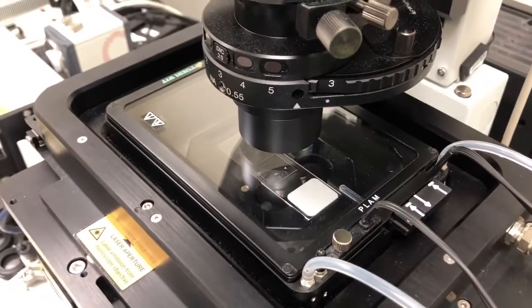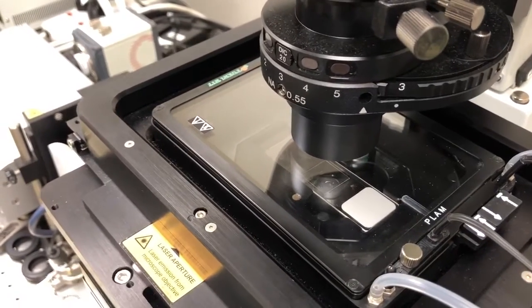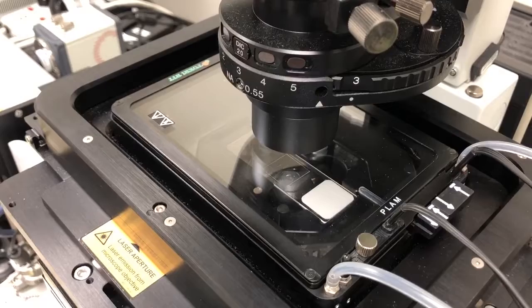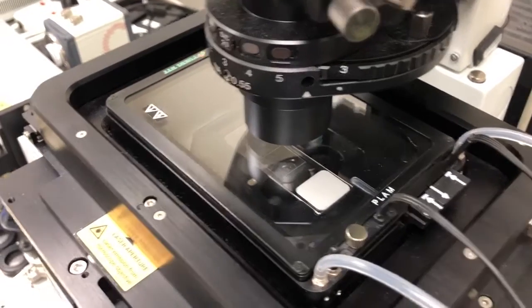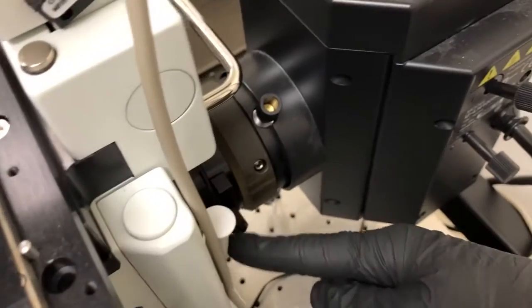So when we're looking by eye, what we need to do is pull that out and then put it in a position where we can see the sample comfortably by eye. And once we're done, we should push that back in. So again, it's this slider here to avoid bleaching our sample.